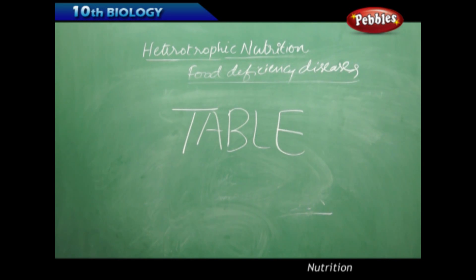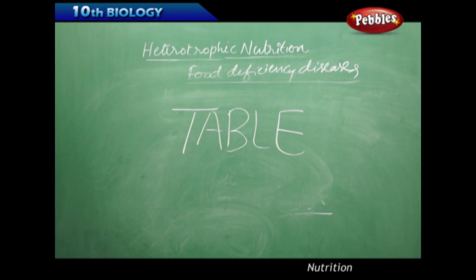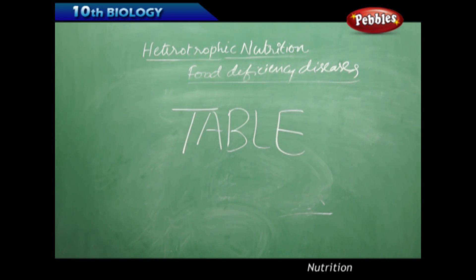Pyridoxine, or B6, has sources including cereals, oilseeds, vegetables, milk, meat, fish, eggs and liver. The deficiency disease is anemia, and symptoms are hyperirritability, nausea, vomiting and fits.